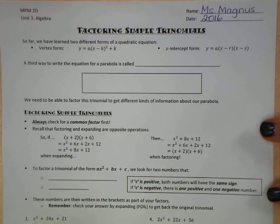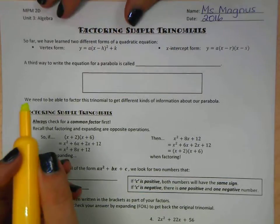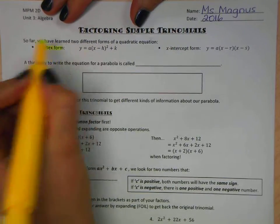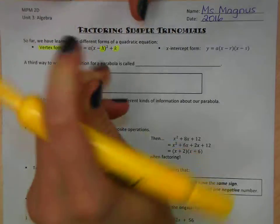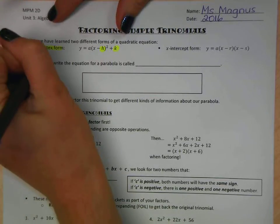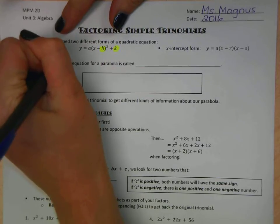Remember we learned two ways how to write a quadratic equation. One was the vertex form, and we used our h and k value in order to figure out the actual vertex. We know it's h and k.